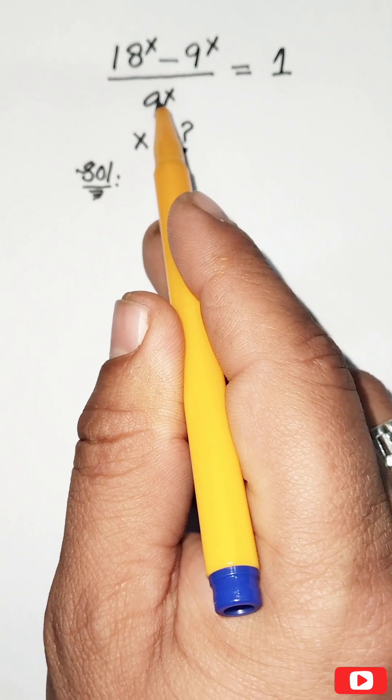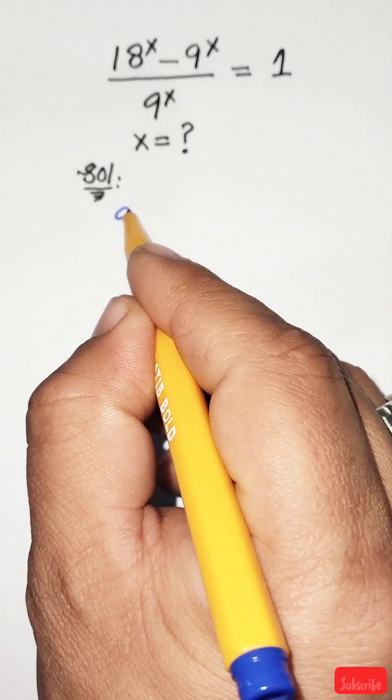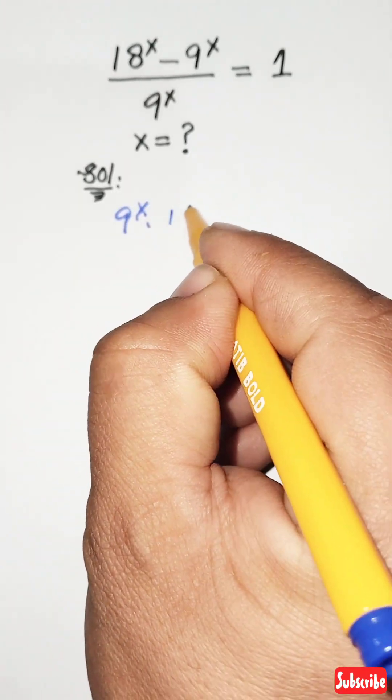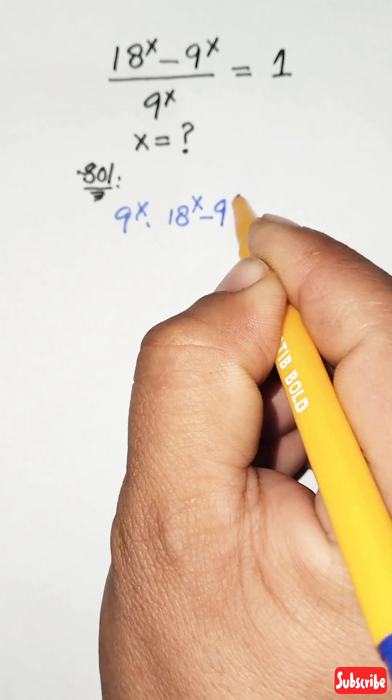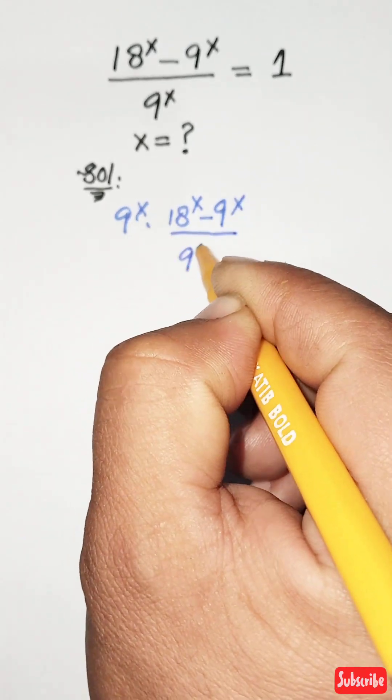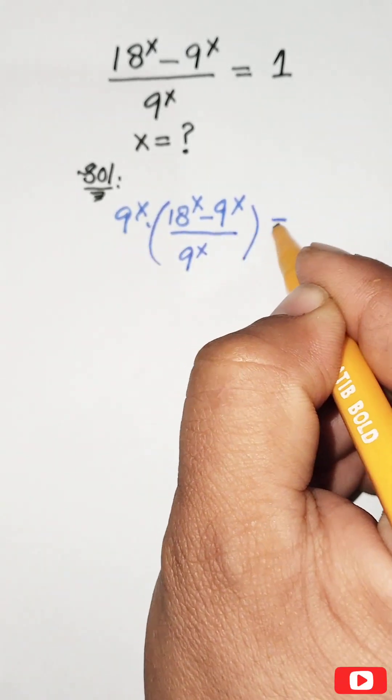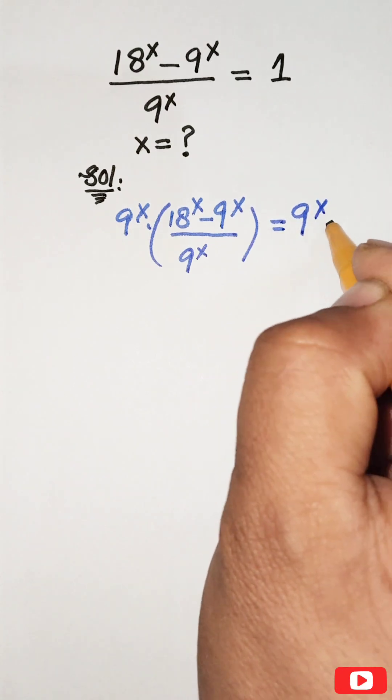First, we multiply both sides by 9^x. Then we get 9^x times (18^x minus 9^x) divided by 9^x, so 9^x times 1.